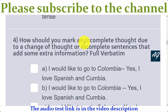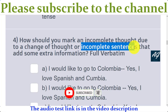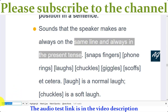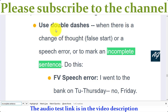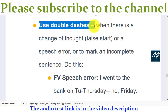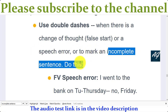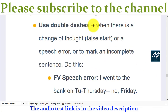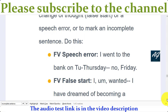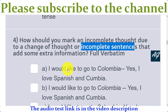Fourth question is: how should you mark an incomplete thought due to a change of thought or incomplete sentence? Checking here in the Transcription Guidelines — use a double dash when there is a change of thought, false thought, a speech error, or to mark an incomplete sentence. So use a double dash. That's why the first option is correct — using a double dash.